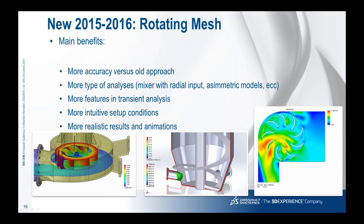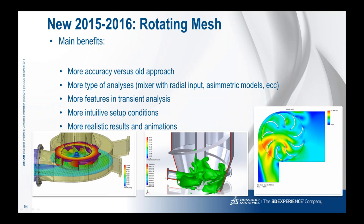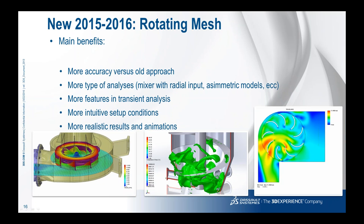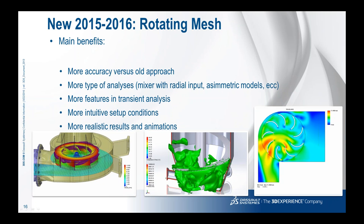One of the most important features introduced in the 2015 release and improved since is the rotating mesh. The rotating mesh is a new approach that literally rotates the mesh inside the domain, leading to greater accuracy compared to the old approach. It allows you to address more types of analysis — mixers with radial inputs, asymmetric models, and more. In transient analysis you can see the rotating region moving and perform time-dependent analysis — for example, simulating the starting or slowing down of a turbine — leading to more realistic results and animation.